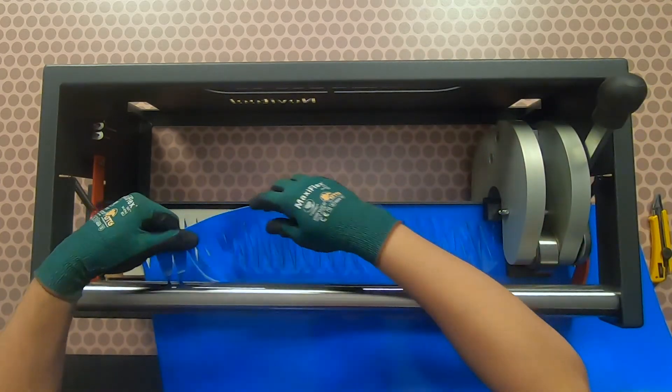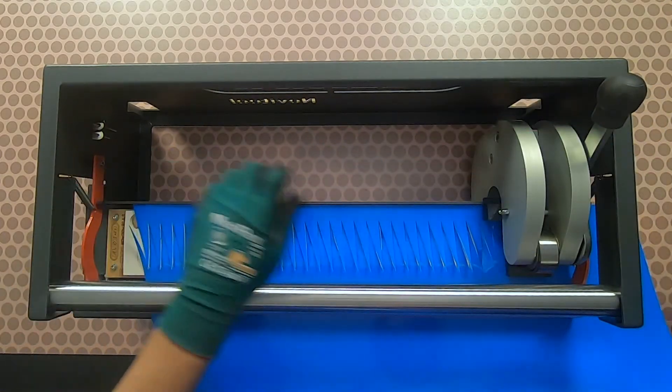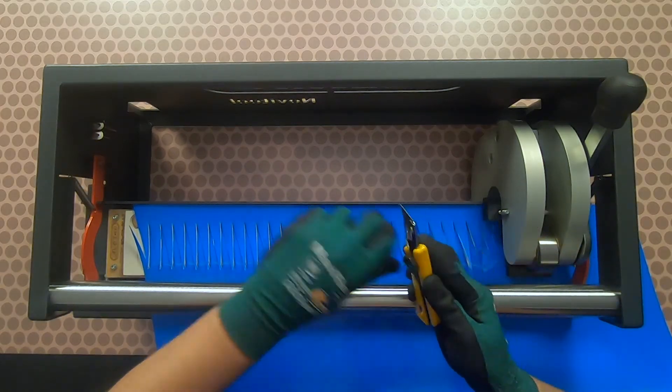While the clamp bar is still locked, cut off the belt wastes from the first section of the punch fingers.